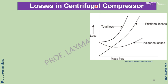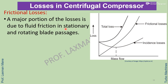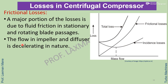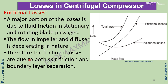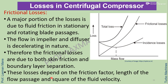Losses in centrifugal compressor: on the diagram, the vertical axis shows losses and the horizontal axis shows mass flow rate. There are three curves: frictional losses, incidence losses, and total loss. Frictional losses form a major portion, due to friction in stationary and rotating blade passages. The flow in the impeller and diffuser is decelerating, so frictional losses arise from skin friction and boundary layer separation. These losses depend on friction factor, length of flow passage, and the square of flow velocity.